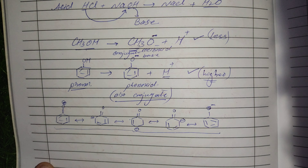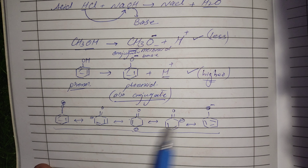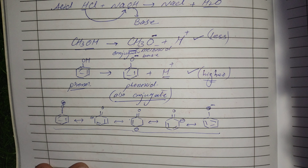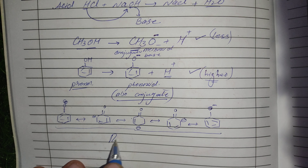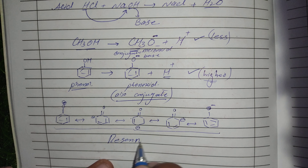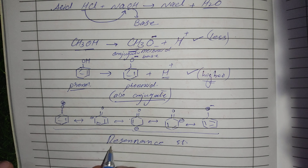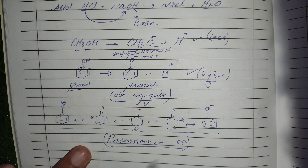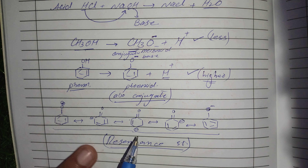When the conjugate base of an acid is stable, the acid will be strong. These are called resonance structures — phenoxide has five resonance structures. Any species that has a greater number of resonance structures will have greater stability, which explains why phenol is more acidic than methanol.